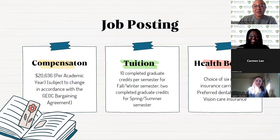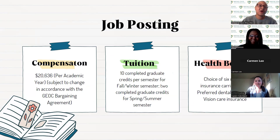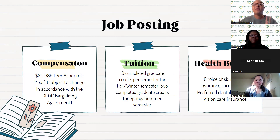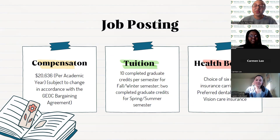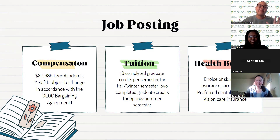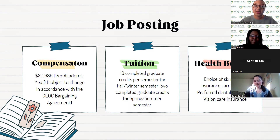So let's talk about the job. Everyone's first thought is probably how much do I get paid? The compensation is $20,636 per academic year. However, that number fluctuates and changes in accordance with the Graduate Student Union, and it tends to go up a little bit each year. At minimum, expect at least $20,000 per academic year in this position.